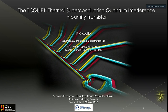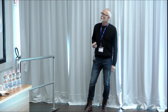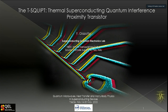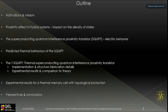Today I will talk about a very basic structure in proximity systems that we named the thermal superconducting quantum interference proximity transistor, the T-SQUIPT. I will start by introducing some motivations and the mission of this research, then introduce background about proximity effect in hybrid systems and the impact on the density of states. Then I will show the concept of the electrical superconducting quantum interference proximity transistor and its predicted thermal behavior.